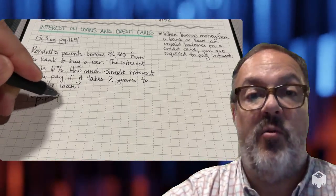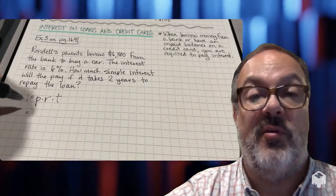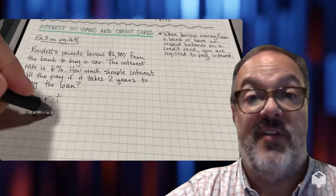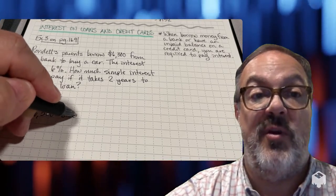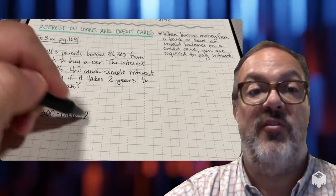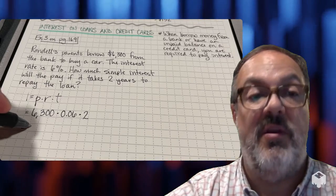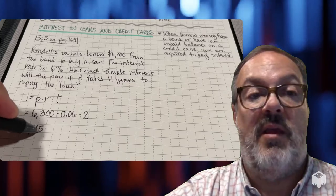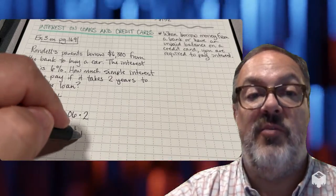Once again, start out with interest equals principal times rate times time. My principal is $6,300, times the rate — 6% is going to be 0.06 — and the time is going to be two years. Multiplying all three of those numbers together, you get $756 interest paid in two years.